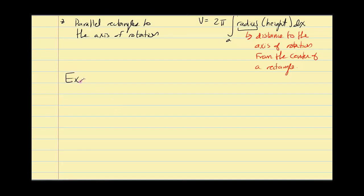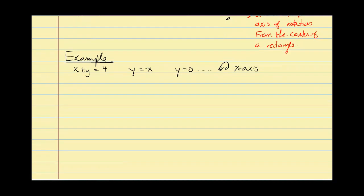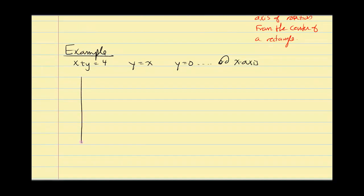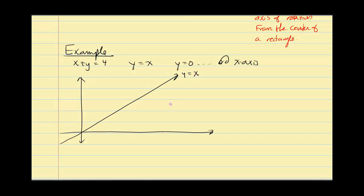Our first example: look at the graphs of x + y = 4, y = x, and y = 0, and find the volume produced by rotating the enclosed region about the x-axis. Curve sketching: y = x bisects the first and third quadrant. y = 0 is the x-axis. For x + y = 4, that's the same as y = -x + 4, so the y-intercept is at 4 and it crosses the x-axis at 4.